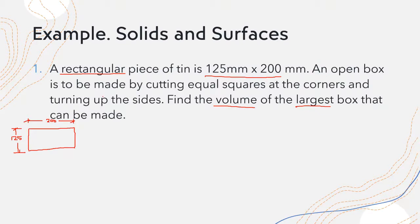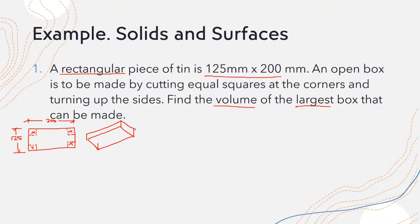An open box is to be made by cutting equal squares at the corners. We'll be cutting equal squares at each corner — these corners will be cut out. If we cut them out and then turn up the sides, it would form an open box. The top is open because we just turned up the sides.